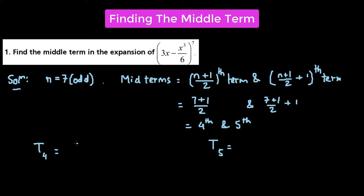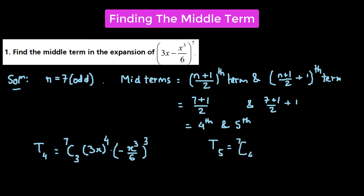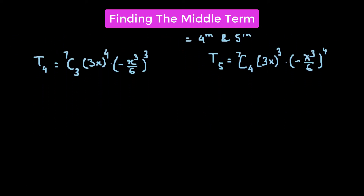Let's begin by writing down the binomial expansion of T4. From the binomial theorem, we get 7C3 times the first term raised to the power of 4, times (−x³/6) raised to the power of 3. And T5 will be 7C4 times the first term raised to the power of 3, times (−x³/6) raised to the power of 4.